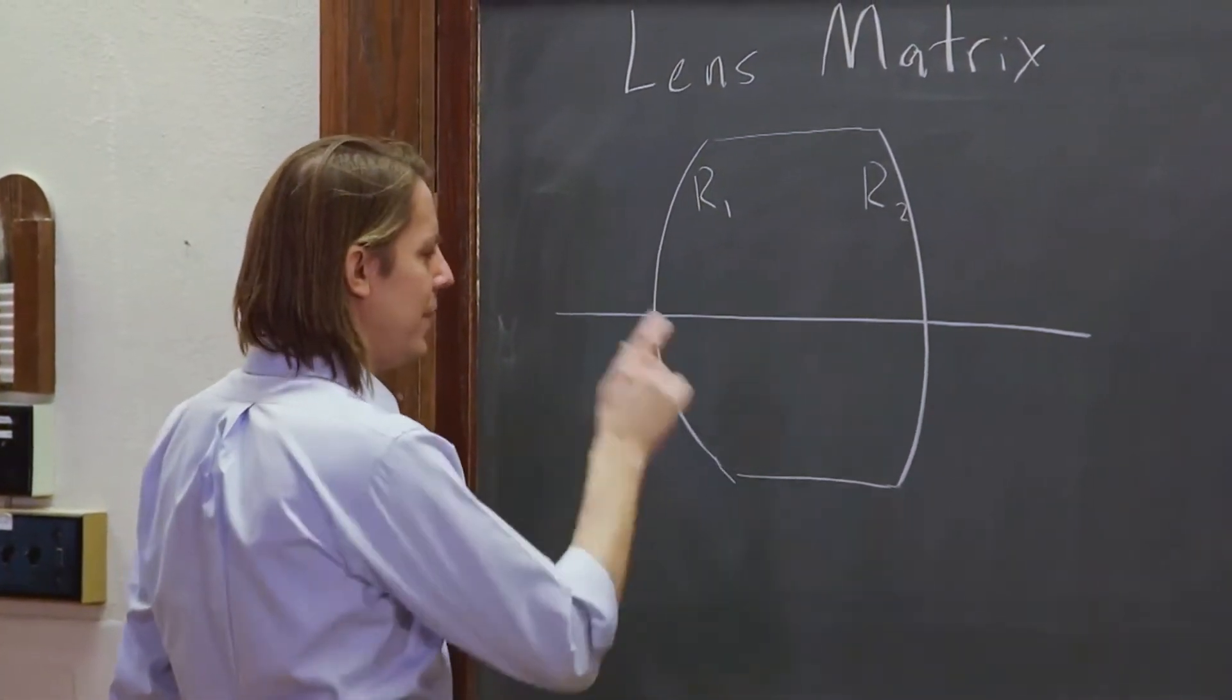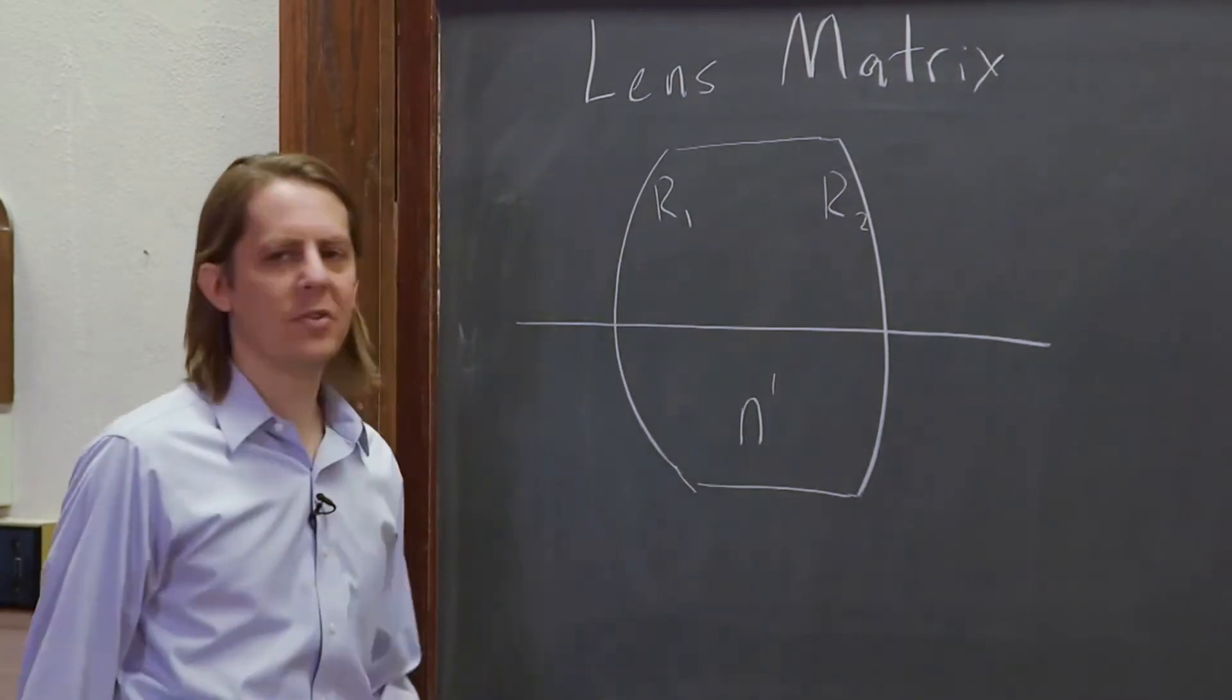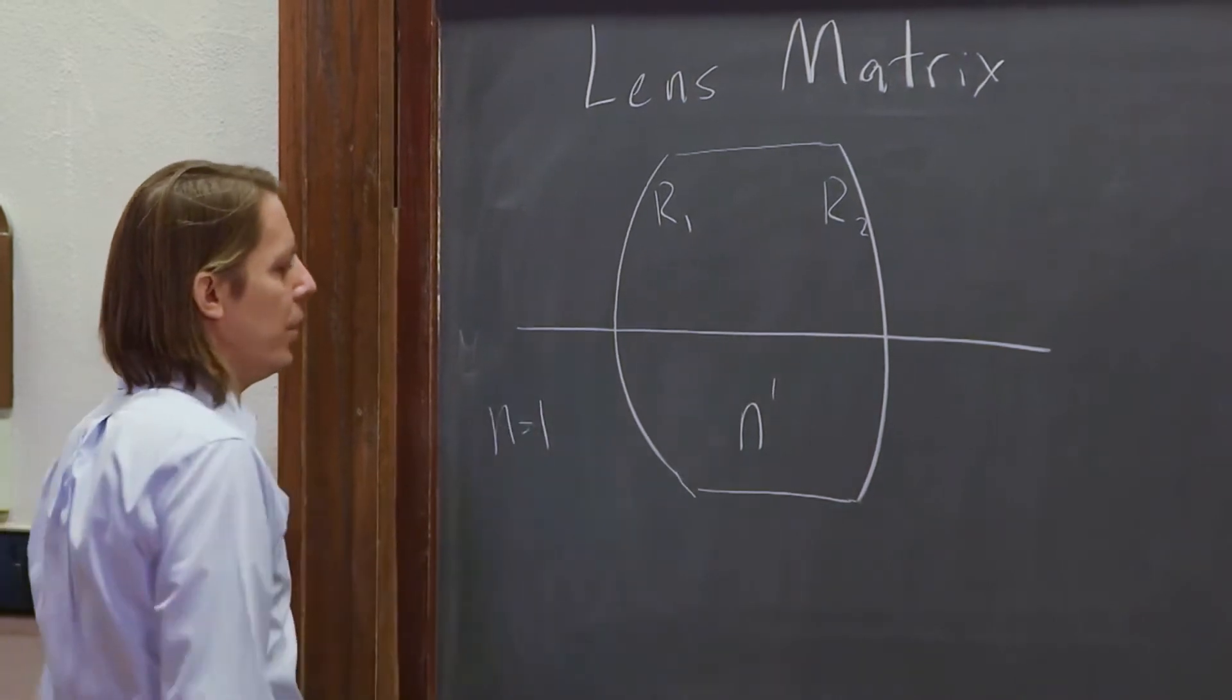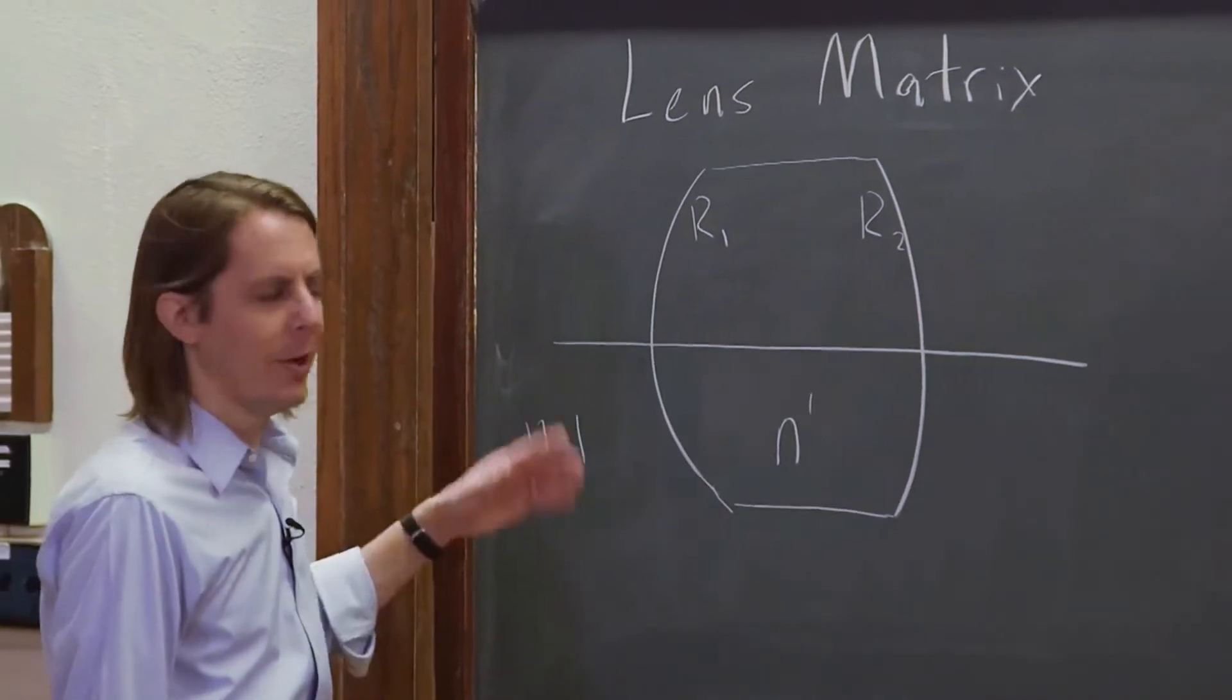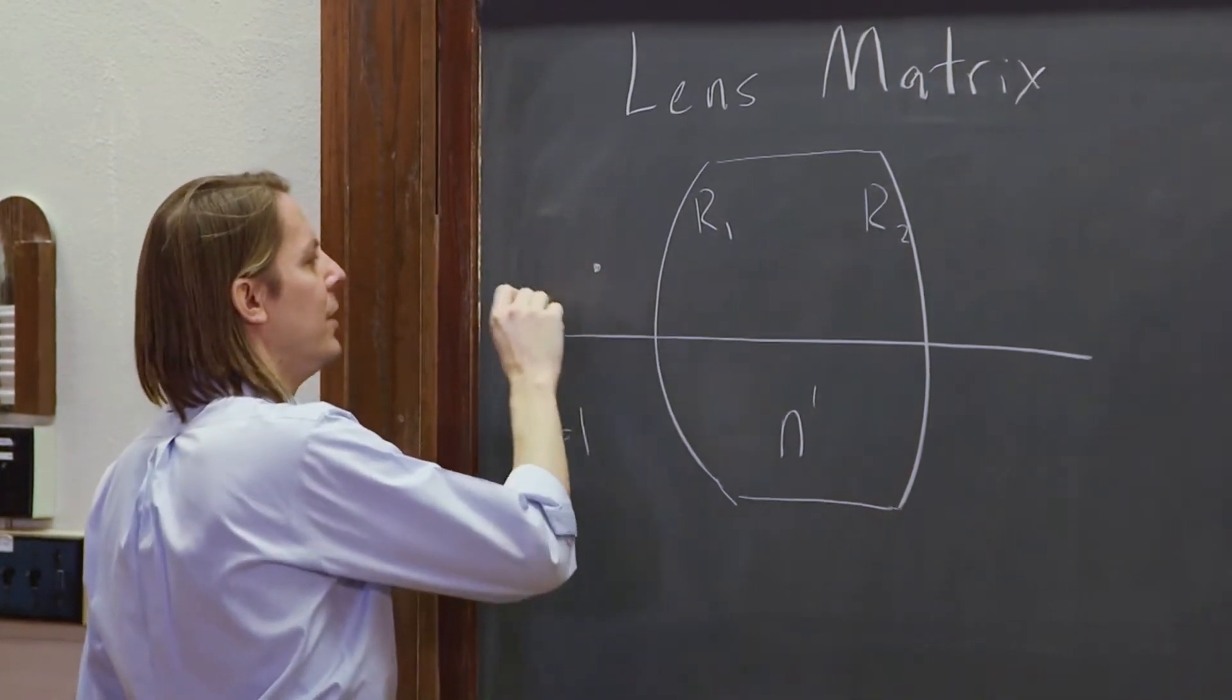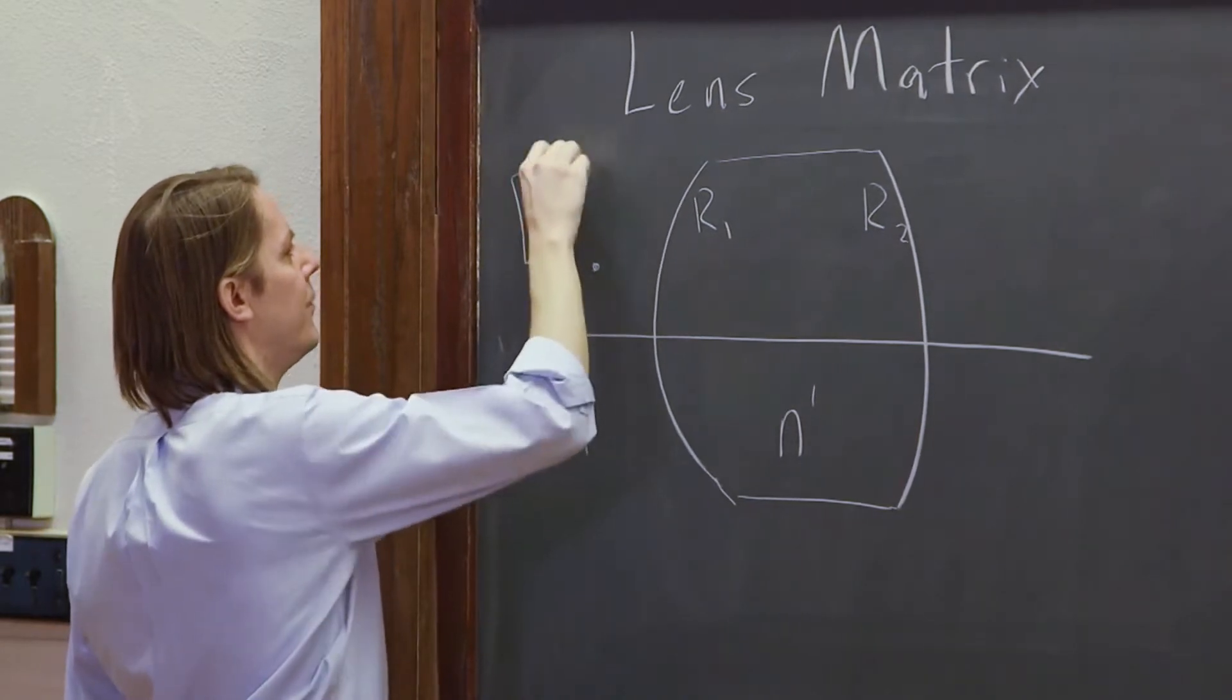And we're going to say that the index of the lens material is n prime, to be consistent with last time. Outside, we're going to say n equals 1, so we'll pretend we're going from air to glass. And we are trying to figure out what is this little ray going to do? This little ray is y-naught alpha-naught.